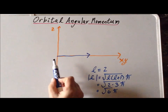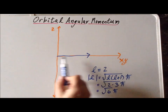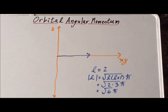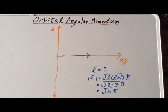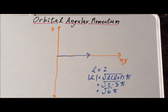Therefore, we can imagine the orbital angular momentum, in this case, being a vector with a length of the square root of 6 times h-bar and one or more possible orientations in space. Remember, a vector has both magnitude and direction.